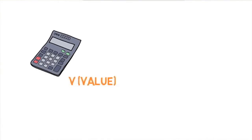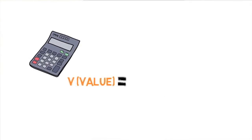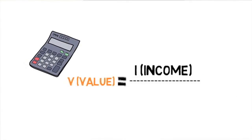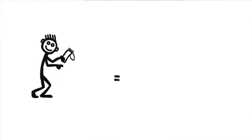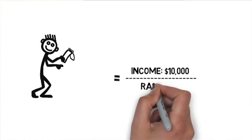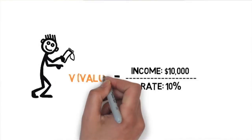If you want to calculate the value of a property using direct capitalization, take the income produced by that property and divide it by the rate of return. If the income produced by the property is $10,000 and the rate of return is 10%, the value of the property is $100,000.